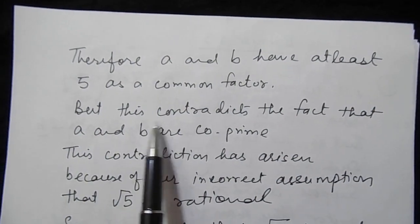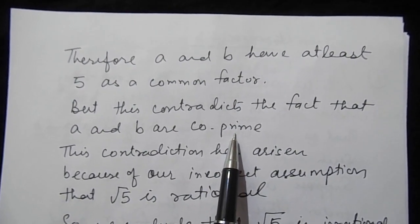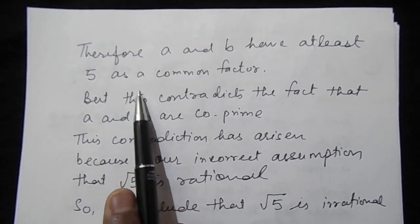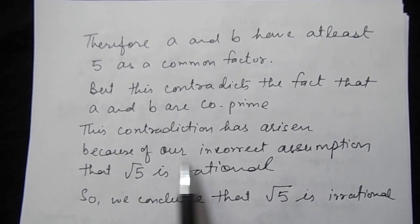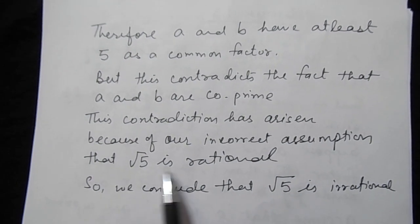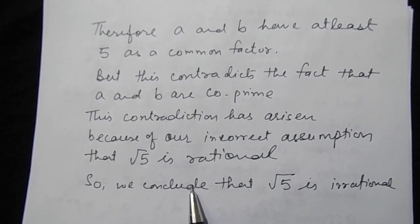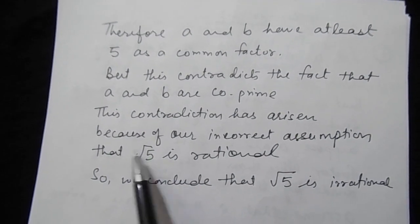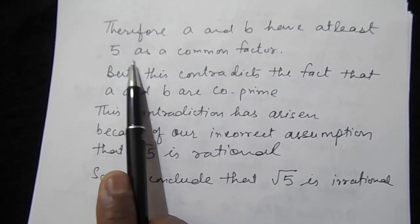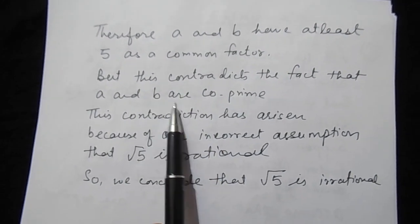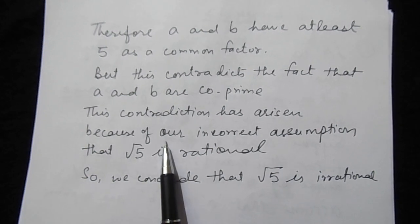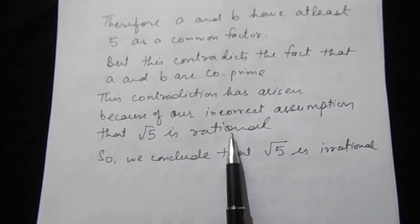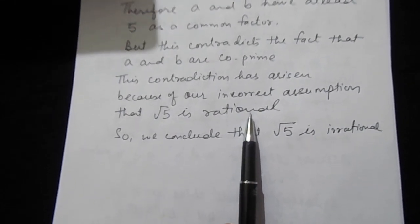But this contradicts the fact that a and b are co-prime. We assumed a and b are co-prime, yet we found that 5 is a common factor of both. This contradiction arose because of our incorrect assumption that √5 is rational. Hence we conclude that √5 is an irrational number.